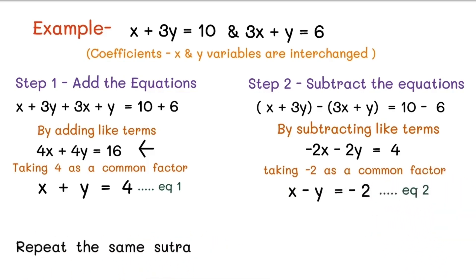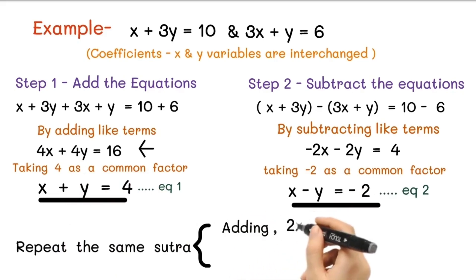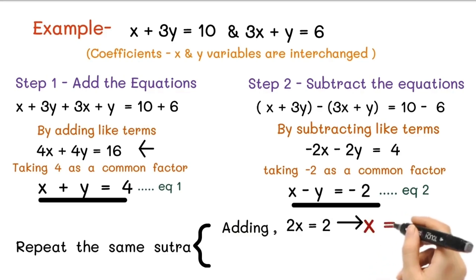Now repeat the same sutra for x + y = 4 and x - y = -2. After addition we will get 2x = 2, and hence x = 1. Similarly, after subtraction we get 2y = 6, that is y = 3. In this way we get the solution: x = 1 and y = 3.